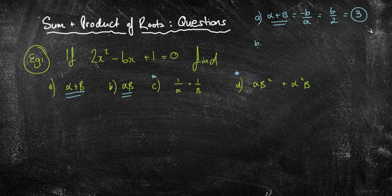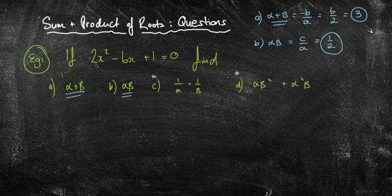My next one is alpha beta. Remember that the formula is c over a, which equals 1 over 2. So you can see the very first two are quite straightforward.